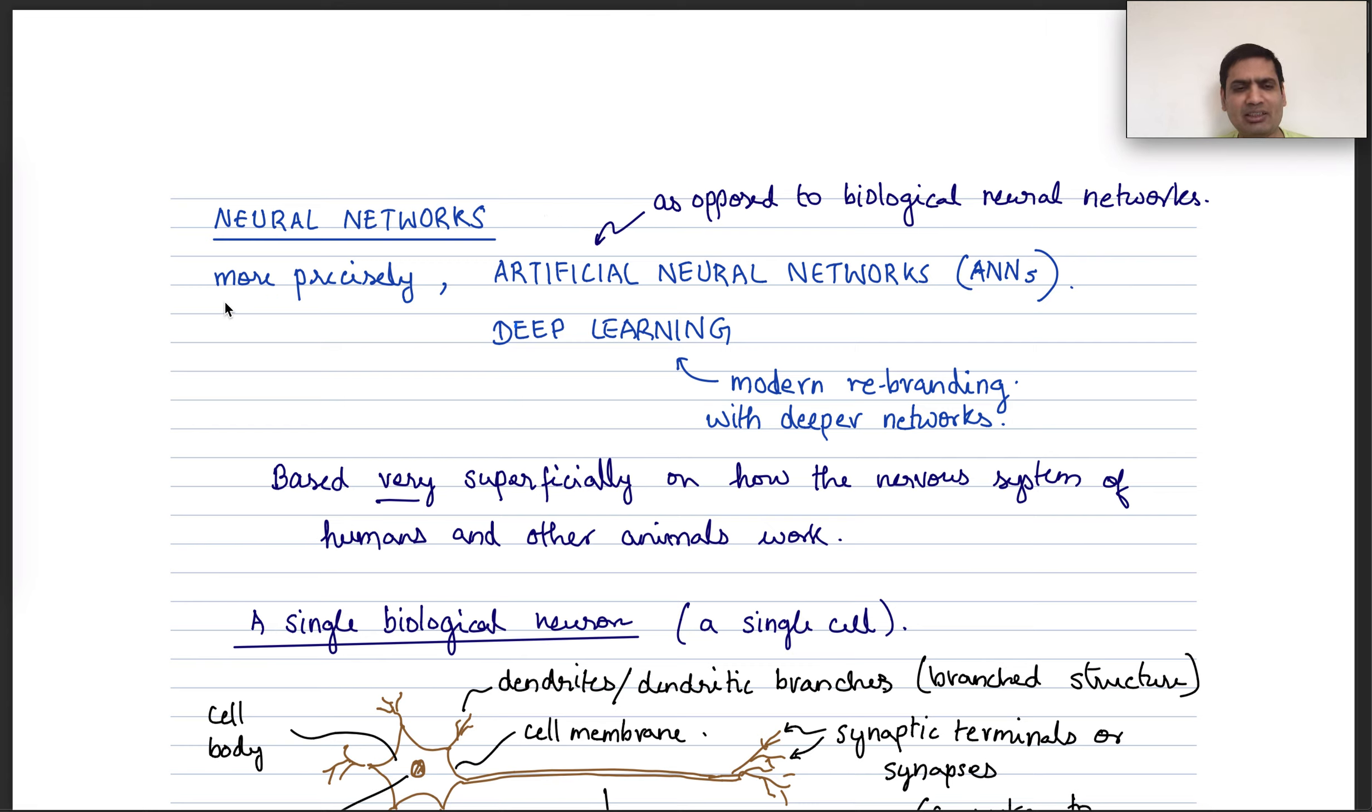And specifically, we will be talking about what are called artificial neural networks, or ANNs for short, as opposed to biological neural networks in the brain.